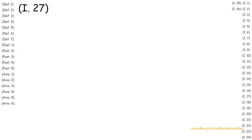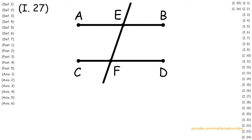To begin we are given line AB and line CD with line EF intersecting both lines. We are also given that angle AEF is congruent to angle EFD. Now, what we want to prove in the end is that line AB and line CD are parallel.